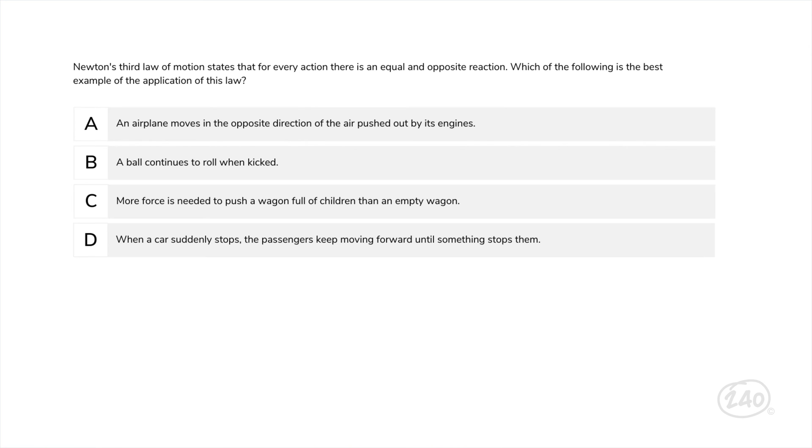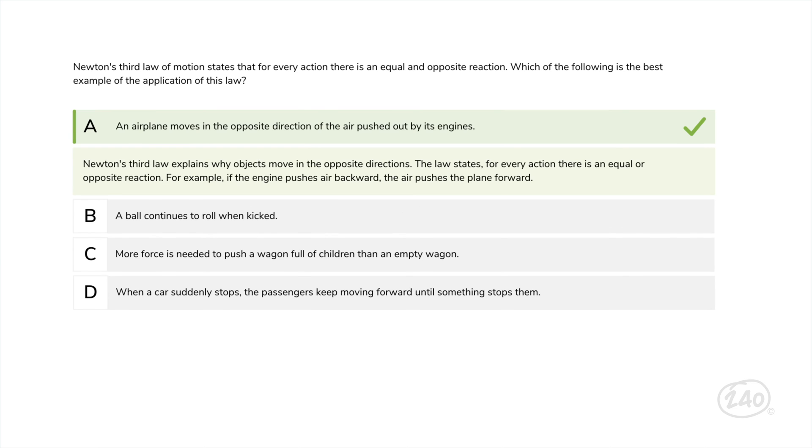Let's throw you a tricky question on motion. Newton's third law of motion states that for every action there is an equal and opposite reaction. Which of the following is the best example of the application of this law? Newton's third law explains why objects move in the opposite directions. The law states for every action there is an equal and opposite reaction. For example, if an airplane engine pushes air backward, the air pushes the plane forward. So this is the best choice.